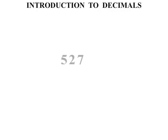In this lesson, we look at an introduction to decimals. Let's consider this number firstly: 527. We've seen whole numbers before, where that 7 would be in the units column, the ones column. The 2 is in the tens column, and the 5 is in the hundreds column. That's not new — we've seen that plenty of times.